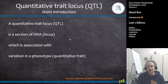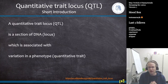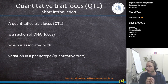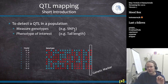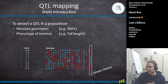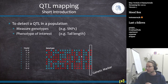So when I was doing this presentation initially, I just had the definition: a quantitative trait locus is a section of DNA which is associated with variance in a phenotype — a quantitative trait. To detect the QTL in a population, we need to have measured genotypes, for example SNPs, and a phenotype of interest such as tail length or yield or whatever. And then at each genetic marker, you just do a regression or a t-test to associate the phenotype with the genetic marker of interest.